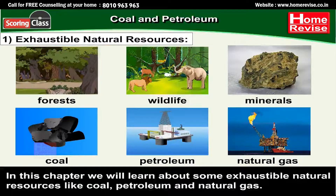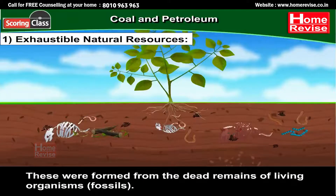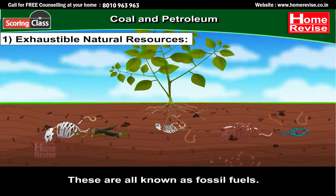In this chapter, we will learn about some exhaustible natural resources like coal, petroleum, and natural gas. These were formed from the dead remains of living organisms or fossils. These are therefore known as fossil fuels.